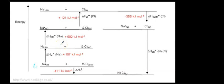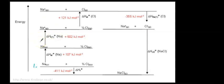The next step is to take those individual sodium atoms, which are in the gaseous state, and turn them into sodium ions. To turn a neutral atom into an ion, we need to remove an electron — this is ionization energy. The ionization energy for sodium is 502 kilojoules per mole. Now the sodium is ready: we have individual Na⁺ gaseous ions.